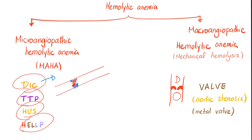In DIC, the clot contains red blood cells, fibrin, and platelets. But in TTP, it's only platelets, maybe some red blood cells, but no fibrin. HUS is like TTP. But HELLP syndrome is like DIC, so we can group HELLP and DIC together, because HELLP can cause DIC.